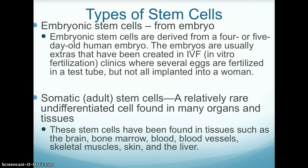Somatic or adult stem cells are relatively rare, undifferentiated cells found in many organs and tissues. These stem cells have been found in tissues such as the brain, bone marrow, blood, blood vessels, skeletal muscles, skin, and the liver.